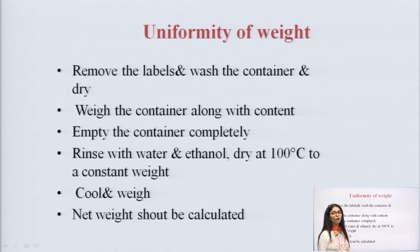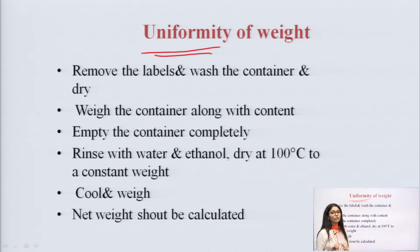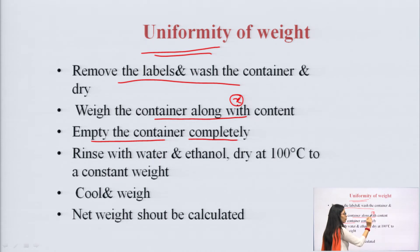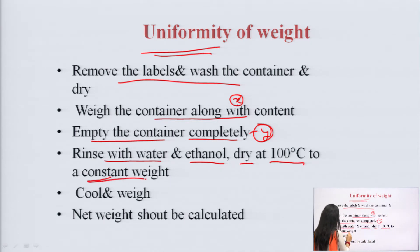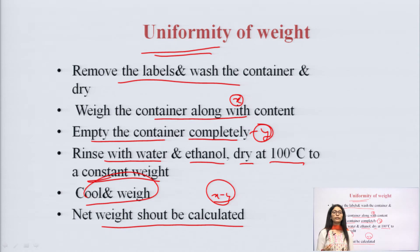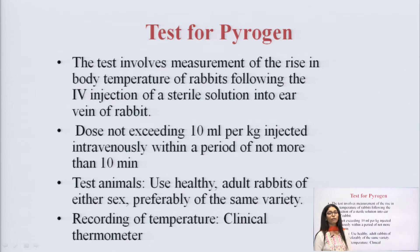Uniformity of weight — we verify that the weight is uniform across all formulations. First, remove the labels, wash the container, and weigh the container along with its content — call this value X. Then empty the container completely, rinse with water and ethanol, dry at 100 degrees Celsius to constant weight, cool, and weigh again — call this value Y. The net weight is calculated as X minus Y. This is how uniformity of weight is assessed.